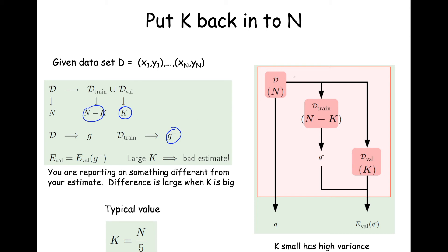If K is very small, you'll have high variance. If K is very big, the difference between G minus and the real G — trained on the full data set — will be very large, because you're robbing your learner of the full data set. The more data points you have, the better the out-of-sample performance in general. A typical value for K is roughly one-fifth of the total amount of data, but that's just a rule of thumb.